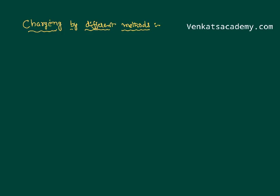Hello everyone. We are in a chapter called electrostatics, where we are dealing with charges in the state of rest. Any body having an equal number of positive and negative charges is called a neutral body. A charged body is one having extra charges. Neutral body means the number of positive charges is equal to the number of negative charges.